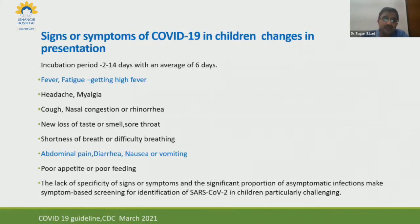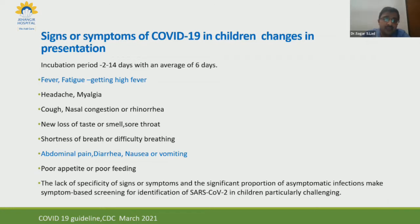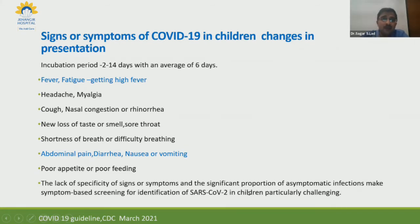The changes in signs and symptoms seen in the current second wave are that children present with fever and fatigue, and this fever is usually high-grade lasting three to four days. Compared to last year when children were mostly asymptomatic, we now see more fever, headache, myalgia, loss of taste and smell sensation — especially in children over eight years. Some children present specifically with abdominal pain, diarrhea, nausea, and vomiting. The significant proportion of asymptomatic infection makes symptom-based screening for SARS-CoV-2 in children particularly challenging.